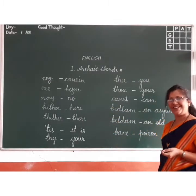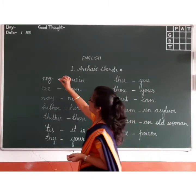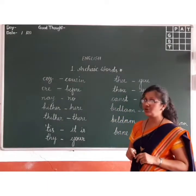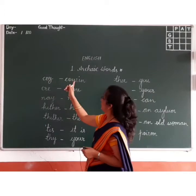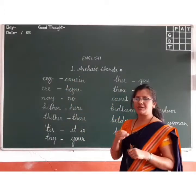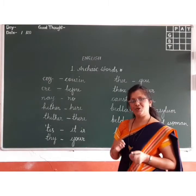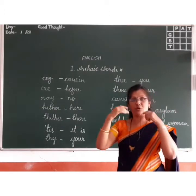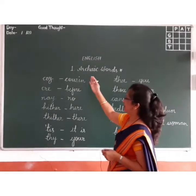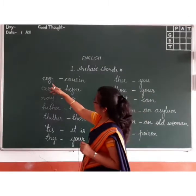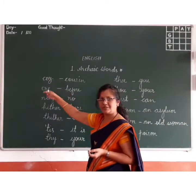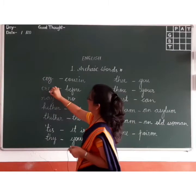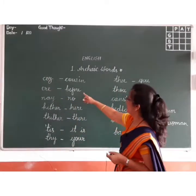Let's see them one by one. The first word is 'coz' — C-O-Z. You might think it means 'because,' but here 'coz' means cousin. Note that in WhatsApp language you write words shortened, but those are not considered archaic — please do not mix up these two concepts. So 'coz' meaning is cousin.